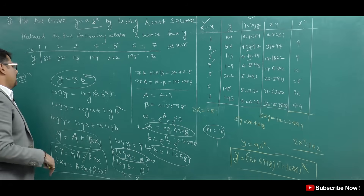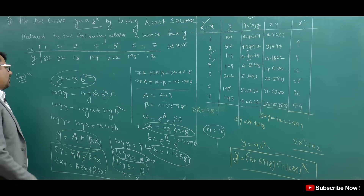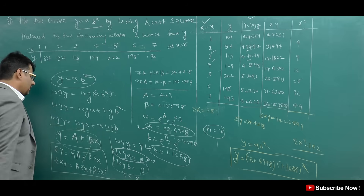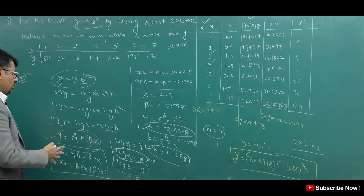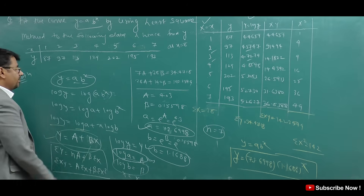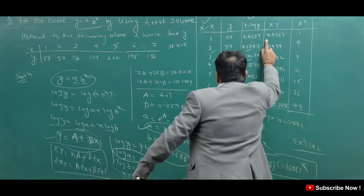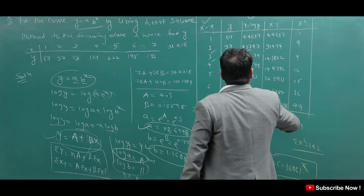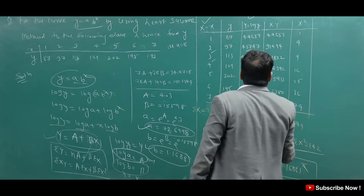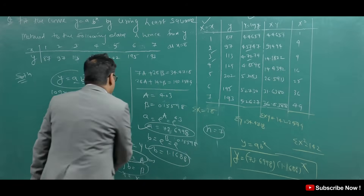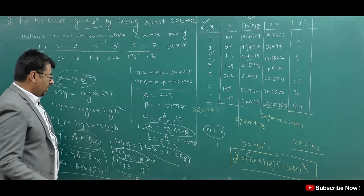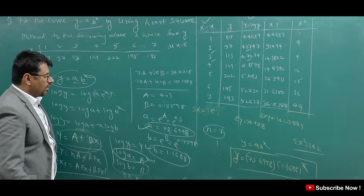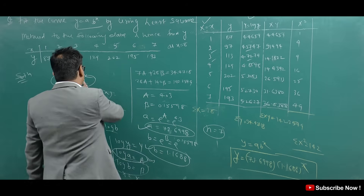Let me revise this question. You have y equals a times b power x to fit. First, take log on both sides: log y equals log a plus x log b. This gives capital Y, capital A, capital X, capital B in the straight line form. You have small x and small y given. Capital Y is small log y and capital X is small x. We compute log y, multiply capital X and capital Y to get XY, find X squared, put in summation equations, solve for capital A and capital B. Small a equals E to power capital A; small b equals E to power capital B. Substitute to get the answer.